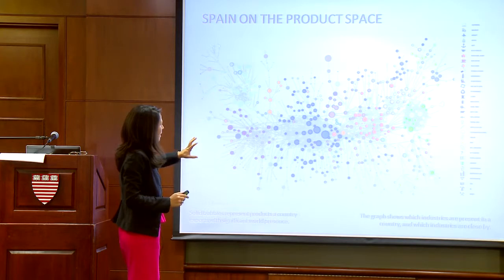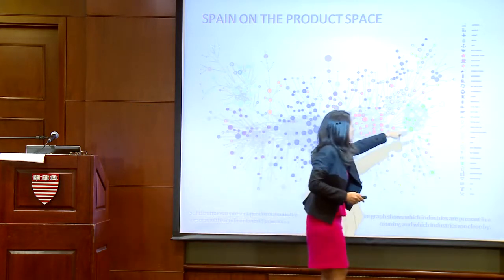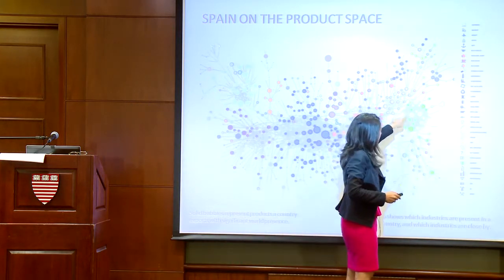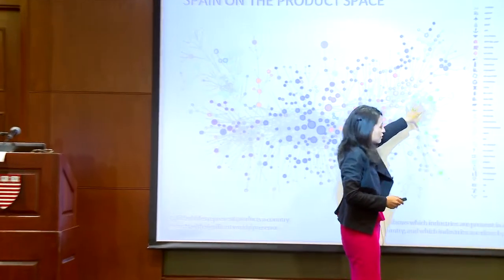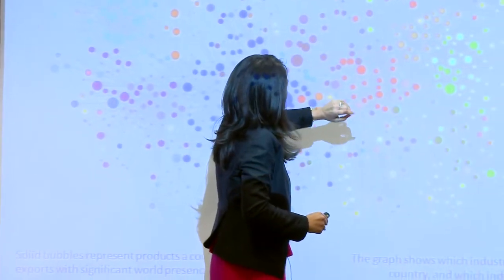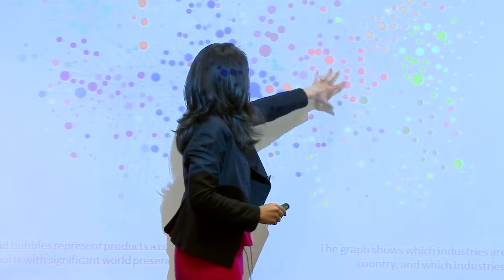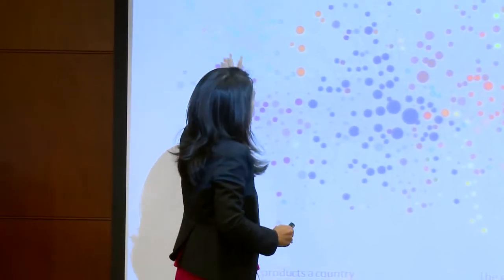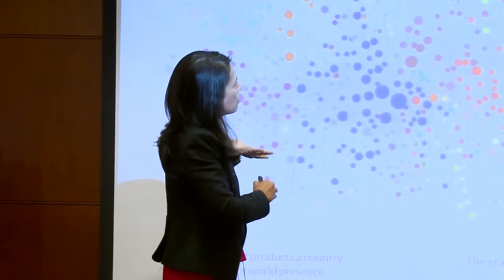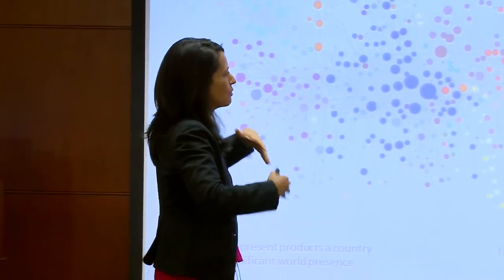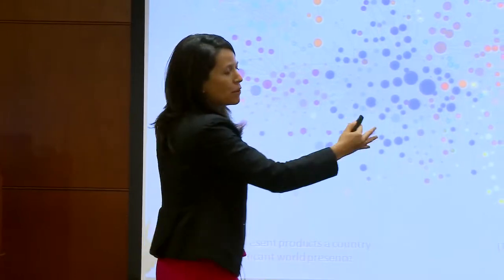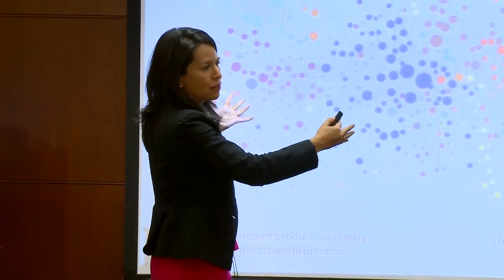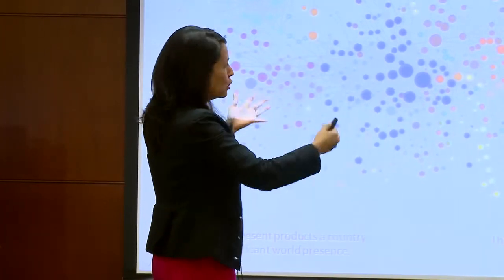This is what we call the product space. Every node in this product space is a product — garments like shirts for men, shirts for women, blazers. These are actual products — construction, machinery, chemicals, electronics, et cetera. The shape of this map really matters for how countries move through the product space.